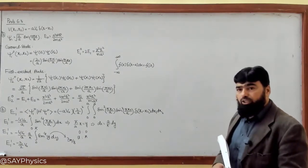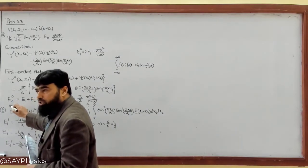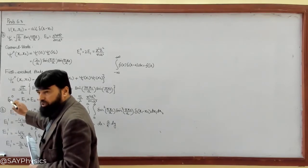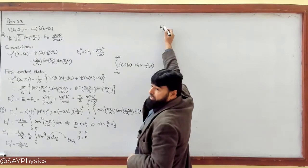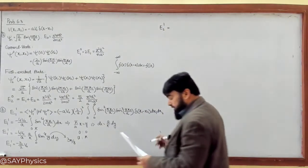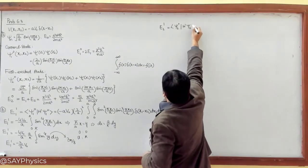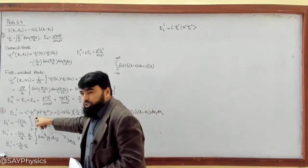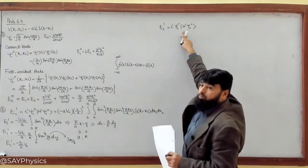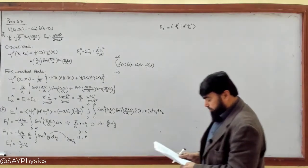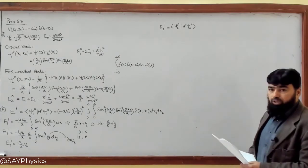Similarly, we can find the first order correction to the first excited state. This is the first excited unperturbed state, and E21 will be the first order correction to the first excited perturbed state. I can write this as ⟨ψ₂⁰|H'|ψ₂⁰⟩ — the same practice as before, but now we take the first excited state unperturbed wave functions and apply H' there.